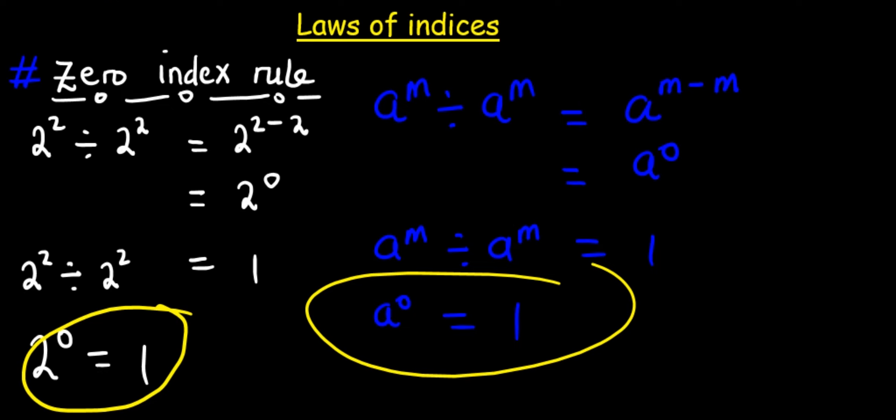Therefore, we are going to conclude that any number to power 0 is equal to 1. A raised to power 0 is equal to 1. Now I have a question.